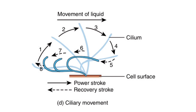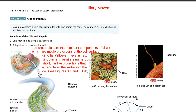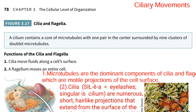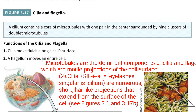This figure shows ciliary movement — what exactly happens during ciliary movement. A cilium contains a core of microtubules with one pair in the center. In the center, one pair of microtubules is present and they are surrounded by nine clusters of doublets — doublet meaning a pair of microtubules. So in short, in the center there are two microtubules surrounded by nine pairs of microtubules. That is the structure of cilia.